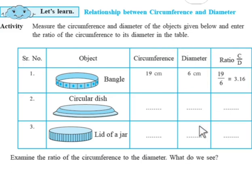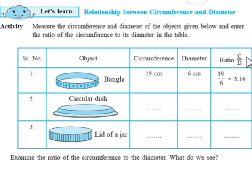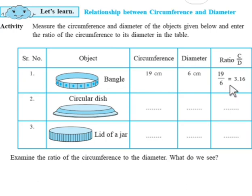If you look at this table, some objects are given and you have to find the circumference and diameter of these circular objects. Also you have to find the ratio of circumference to the diameter. The first object is a bangle whose measurements are already given in the table, along with the ratio of circumference to the diameter.